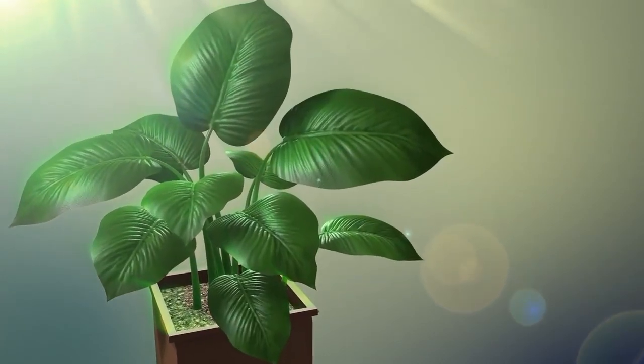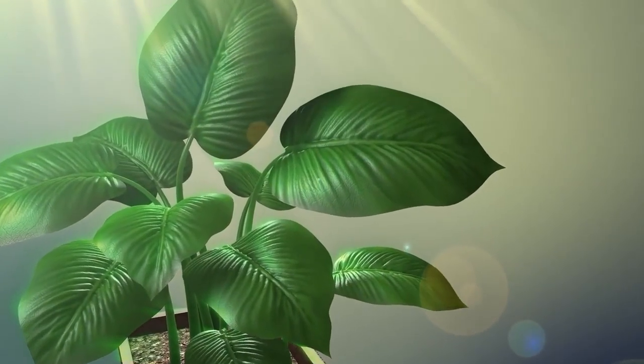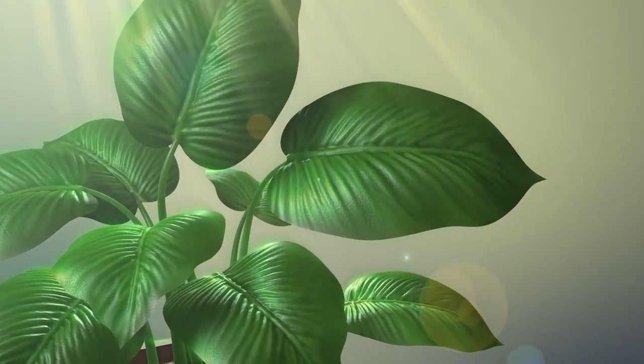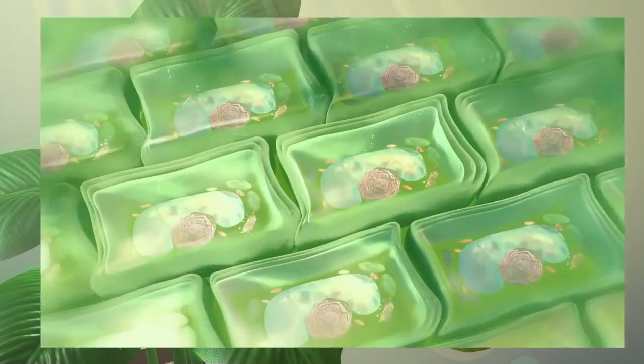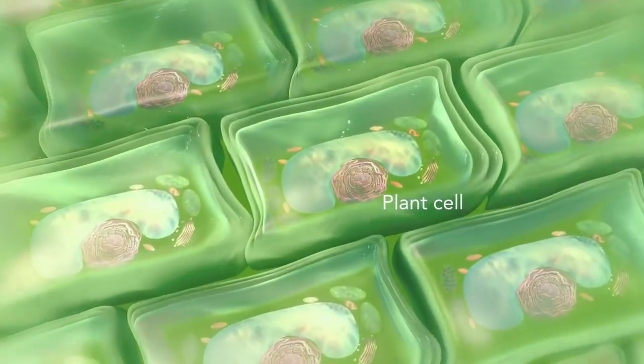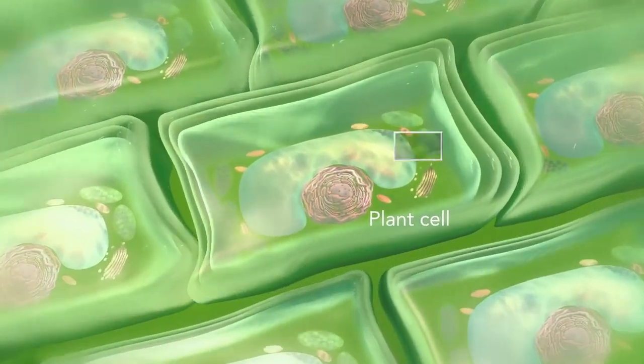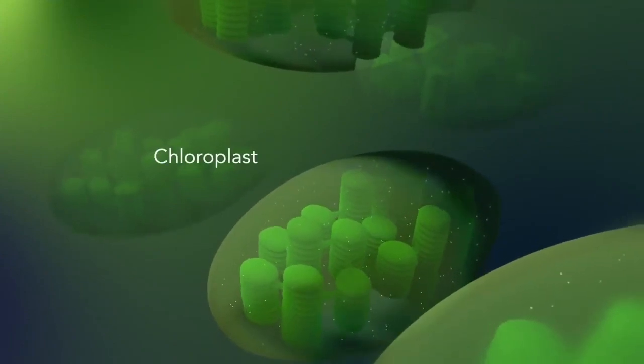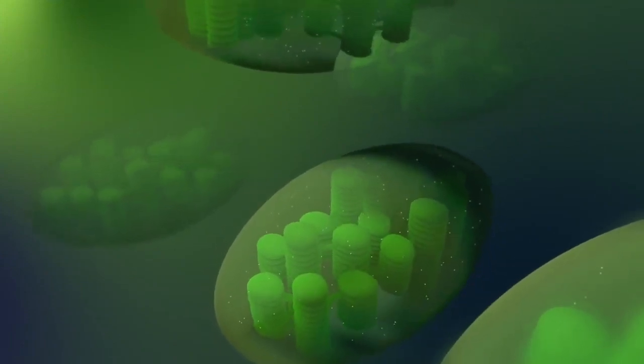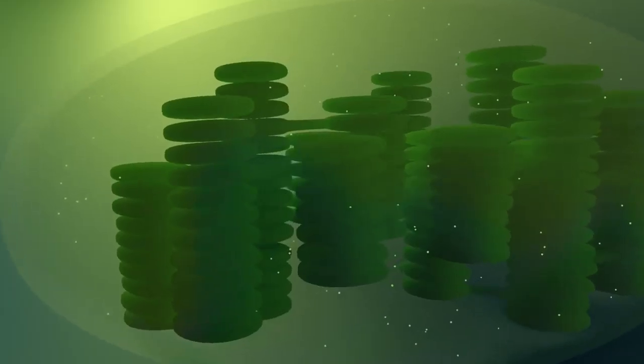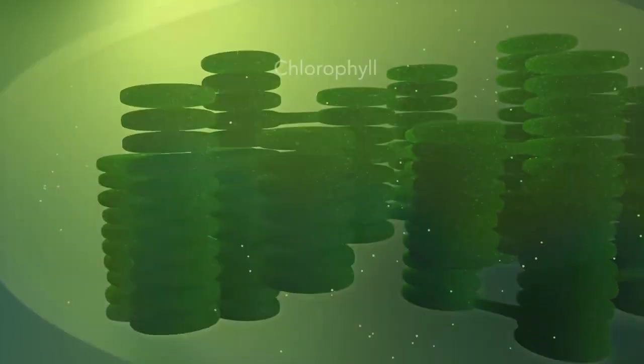Some organisms, such as plants that are photo-autotrophic, meaning they capture sunlight for energy, have cells with an organelle called a chloroplast. The chloroplast is where photosynthesis happens. It's green because it has a green pigment called chlorophyll.